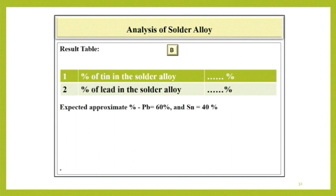Result table. Percentage of tin in the solder alloy. Percentage of lead in the solder alloy. Expected approximate percentage of lead is equal to 60% and that of Sn is equal to 40%.